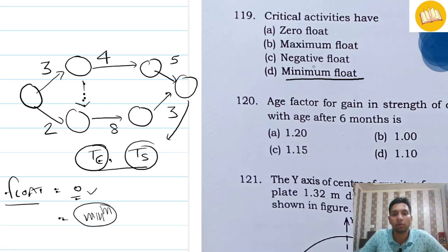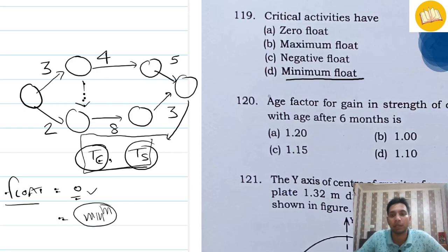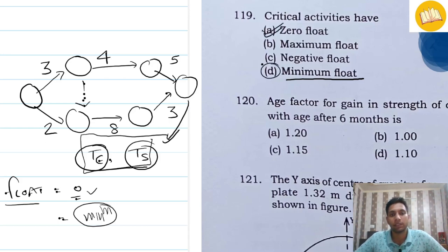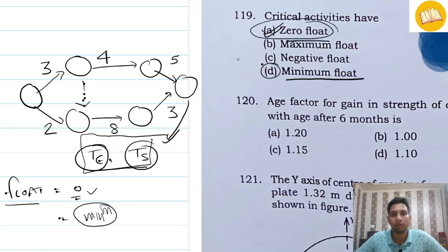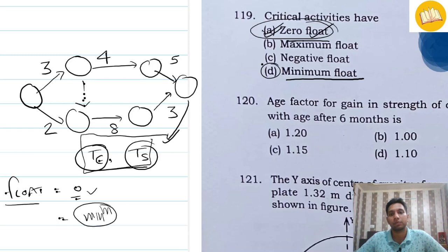Since in practice we assume expected time and scheduled completion time are the same, the correct answer should be 0 float, not minimum float. This can be verified in many previous year questions — in the IES exam also, this question was directly asked and the answer given is 0 float. So the correct answer here is 0 float, even though many books state minimum float.